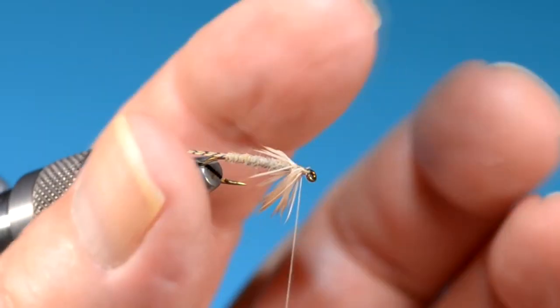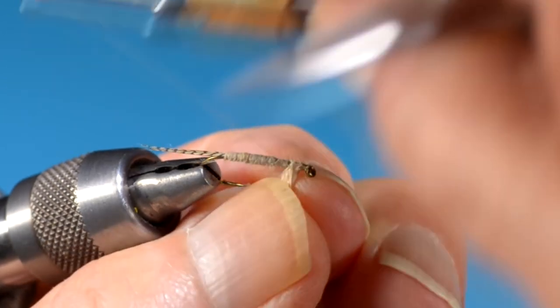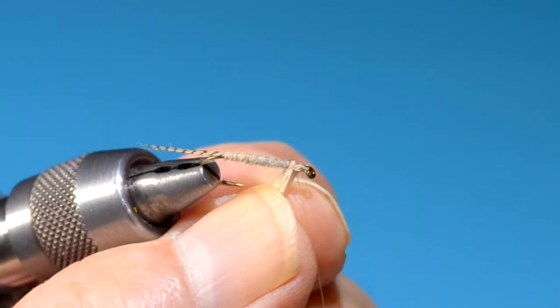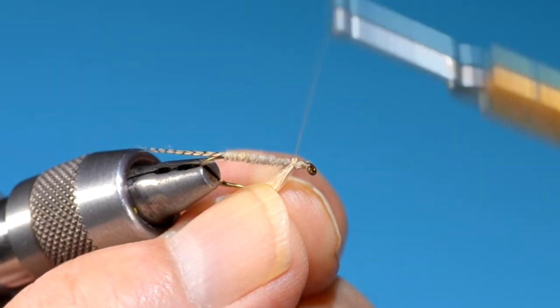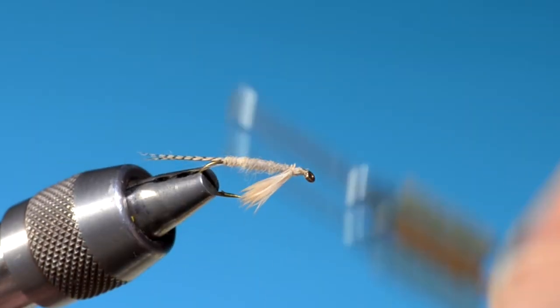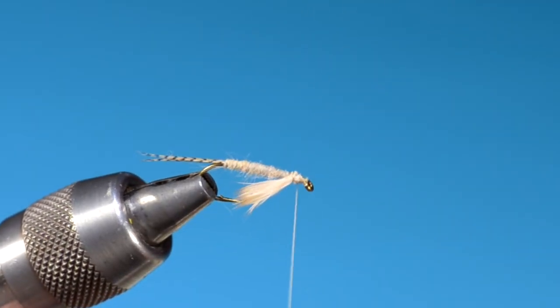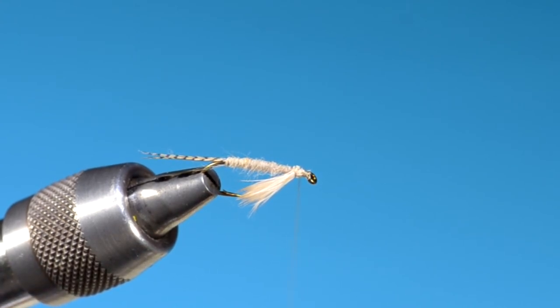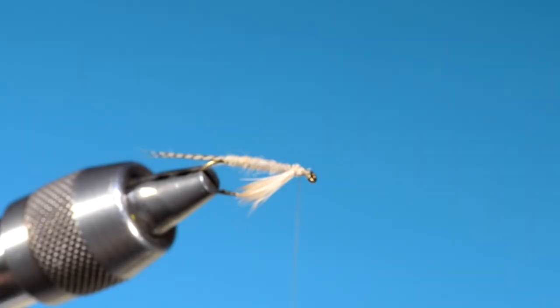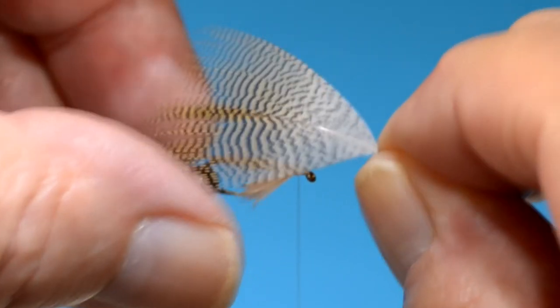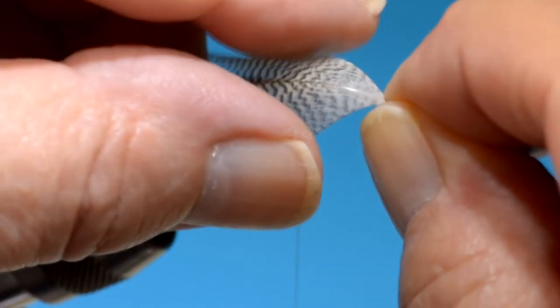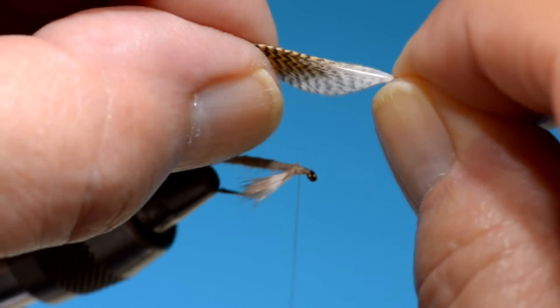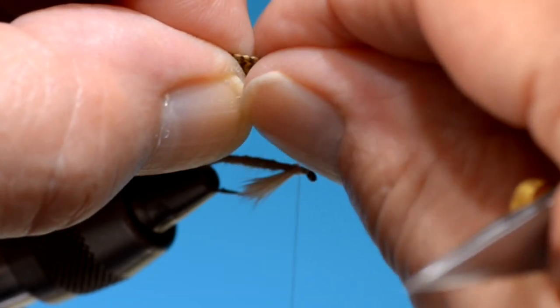That and the Sulfurs are the two big hatches in the east. In fact, the Stenonema hatches in general, the March Brown, the Gray Fox, and the Light Cahill are very prevalent almost everywhere in the east. And in the Midwest as well. I've had some great days on the Mad River with this Light Cahill wet.